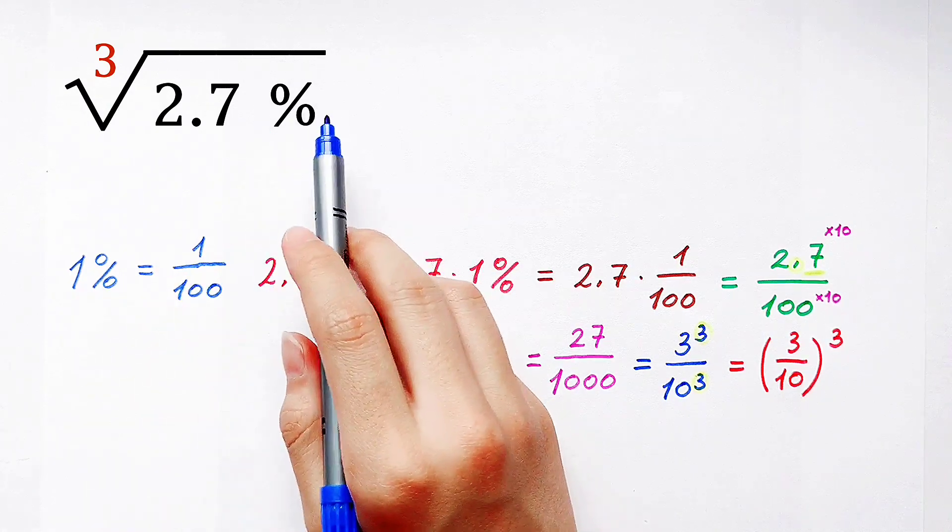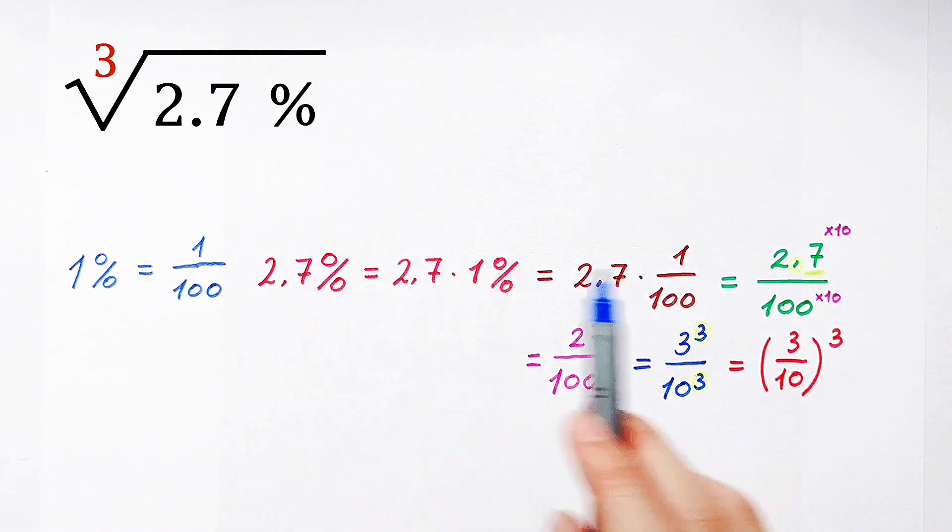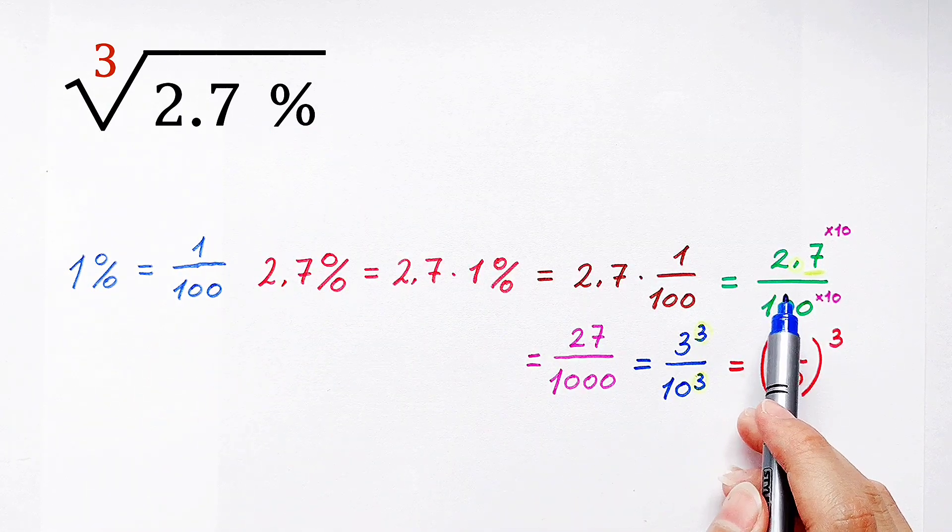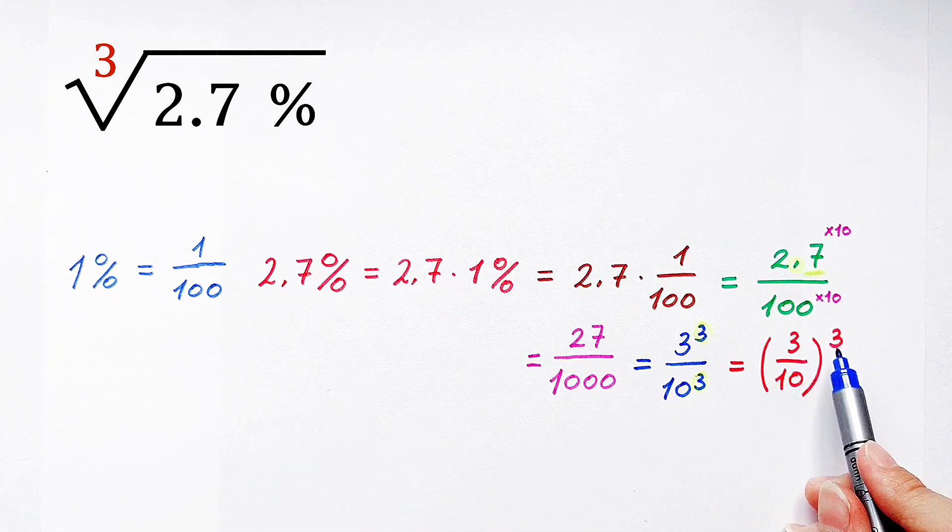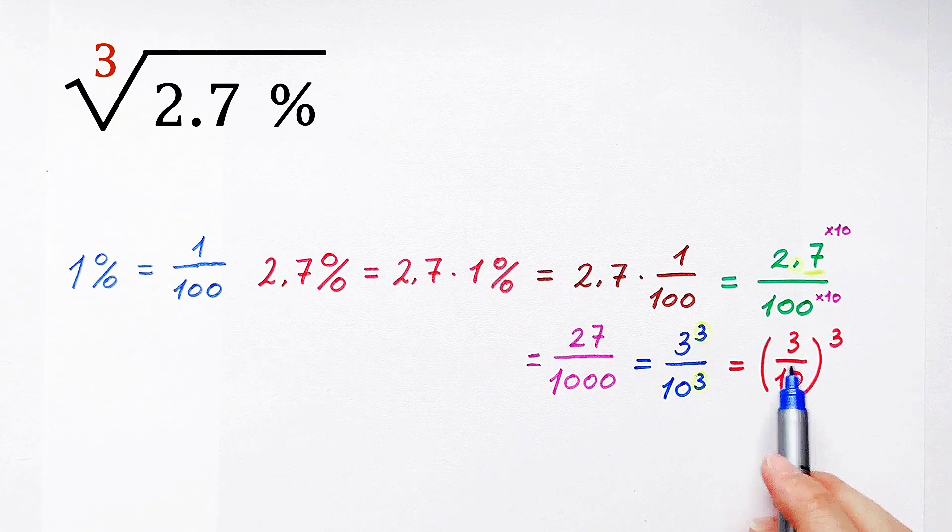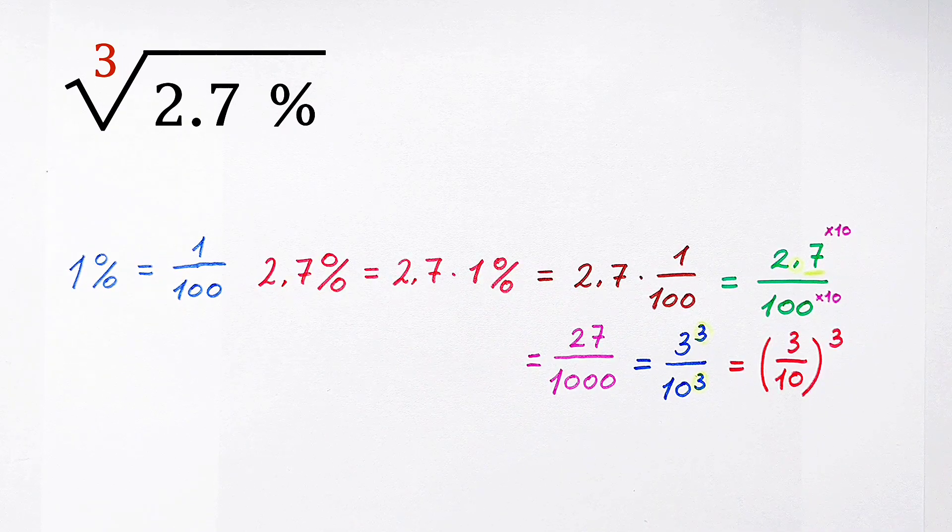So this is 3 divided by 10 to the power 3. And now because we want to calculate the value of the cube root of 2.7 percent, but 2.7 percent is 3 divided by 10 all to the power 3.